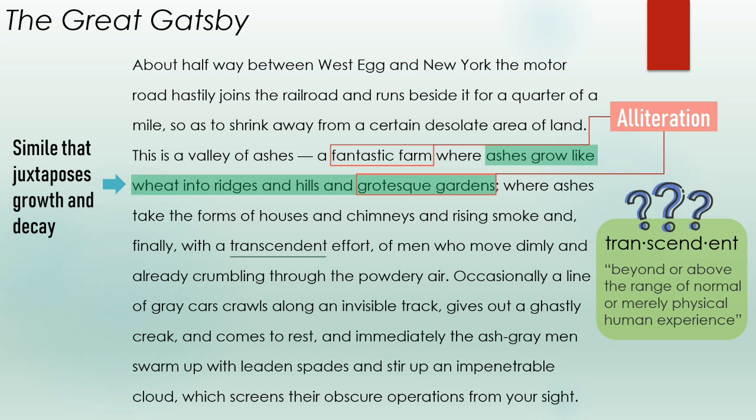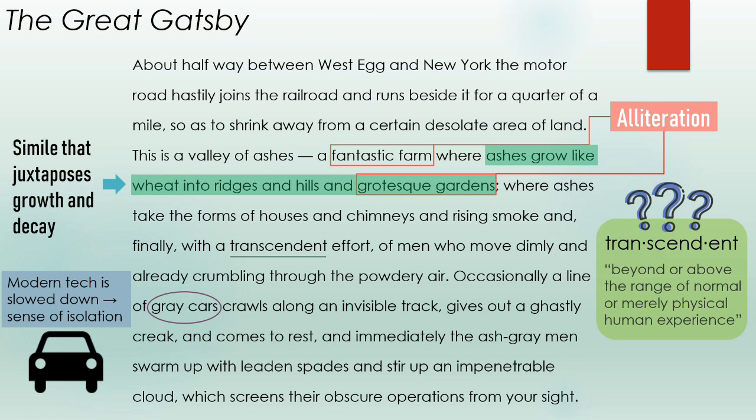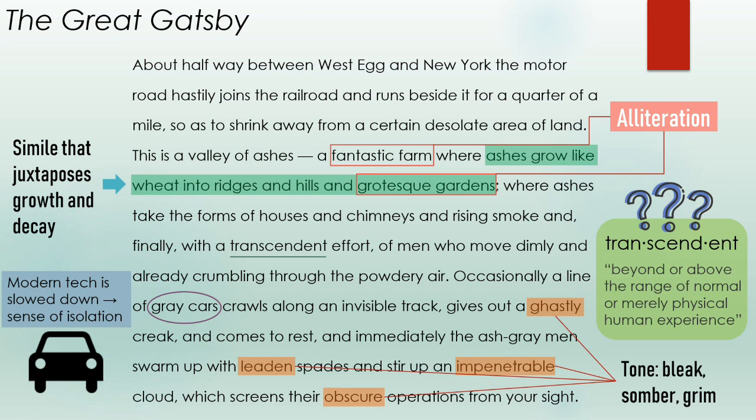We see a lot of repetition with the color gray. The cars are gray, showing that modern technology is slowed down here. This Valley of Ashes seems isolated, almost stuck in a certain time — very stagnant. And words such as 'ghastly,' 'leaden,' 'impenetrable,' and 'obscure' create a grim, bleak, or somber tone.